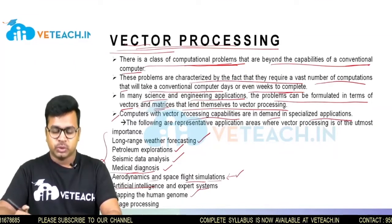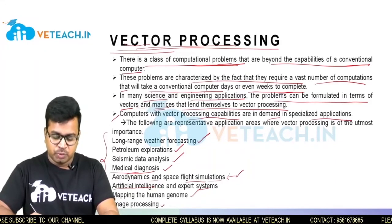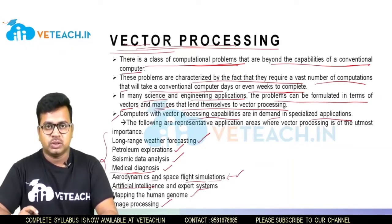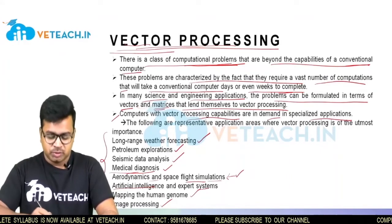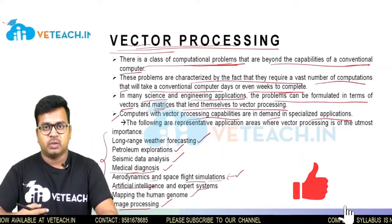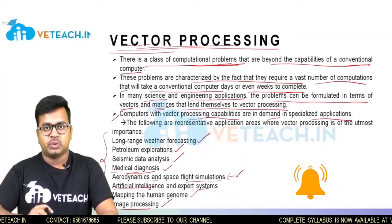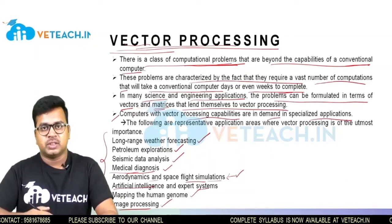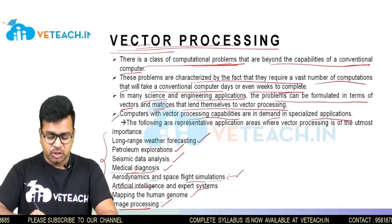Mapping the human genome also requires very large vector processors. Image processing is another critical technology — used in crime records to identify criminals and track their activities. In everyday environments such as train stations and bus stations, image processing can identify dangerous individuals, and vector processors support all these image processing tasks.